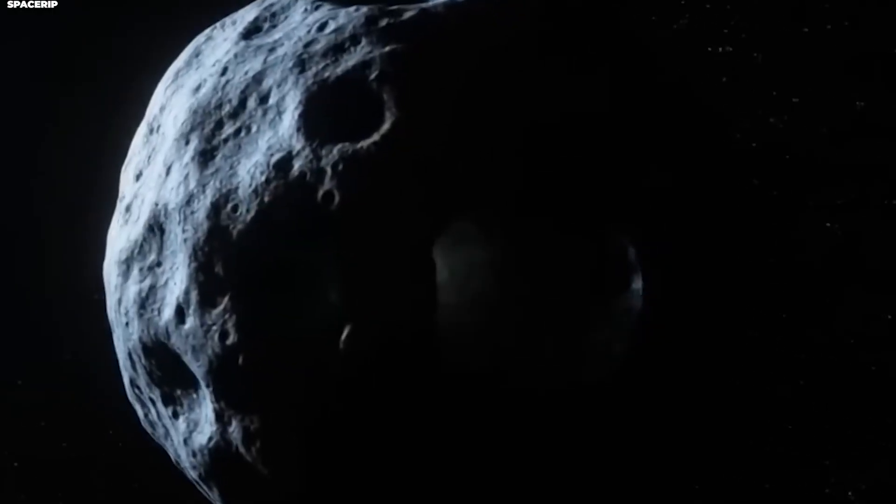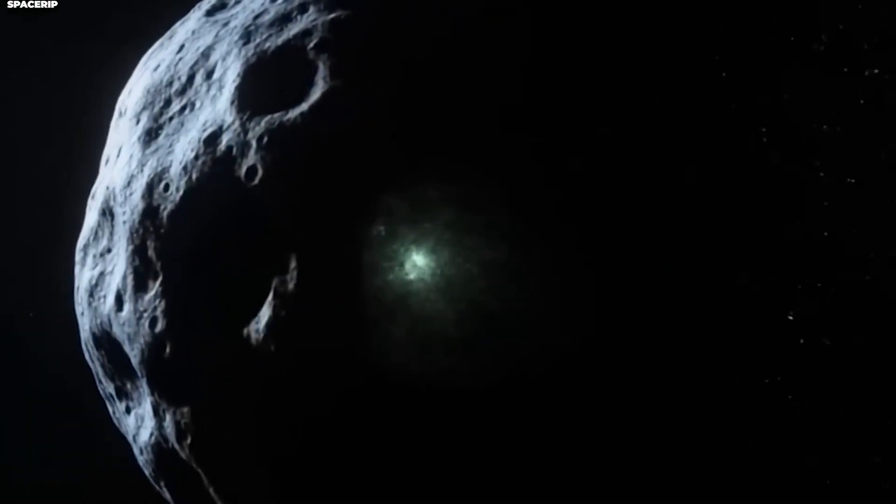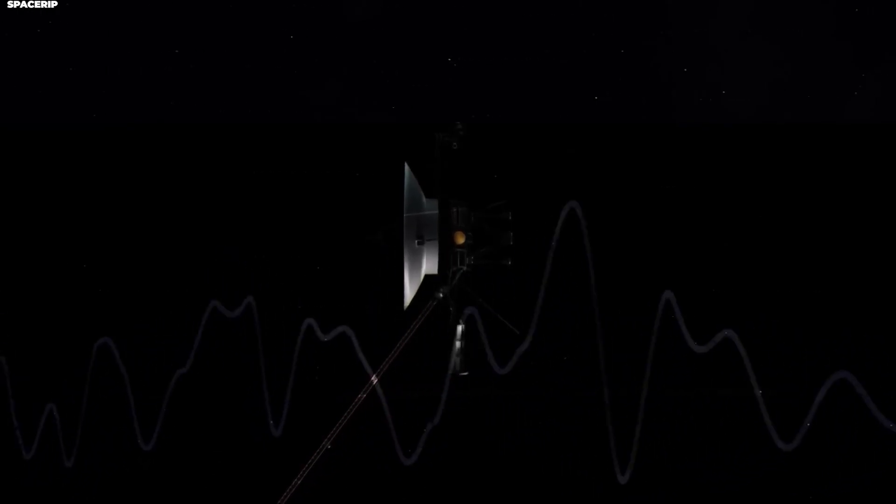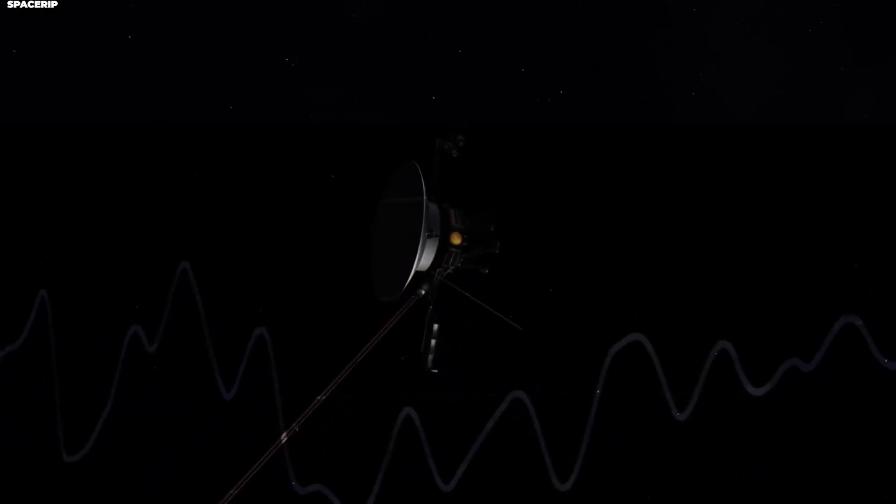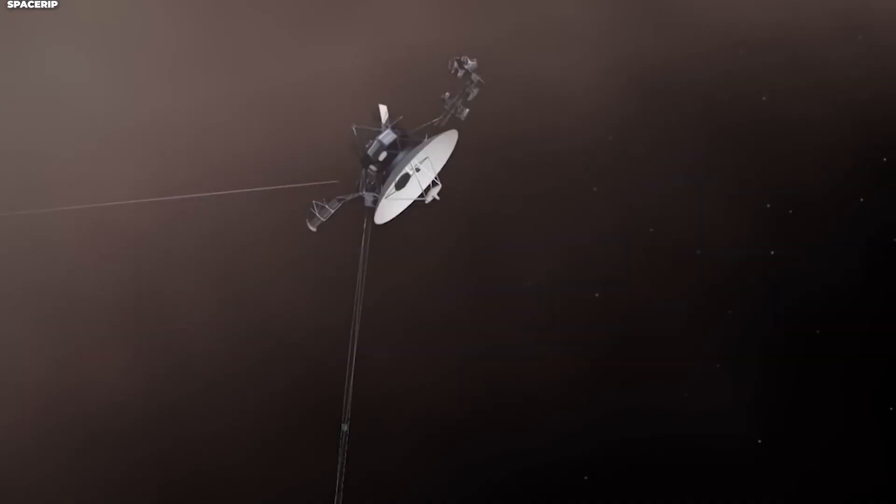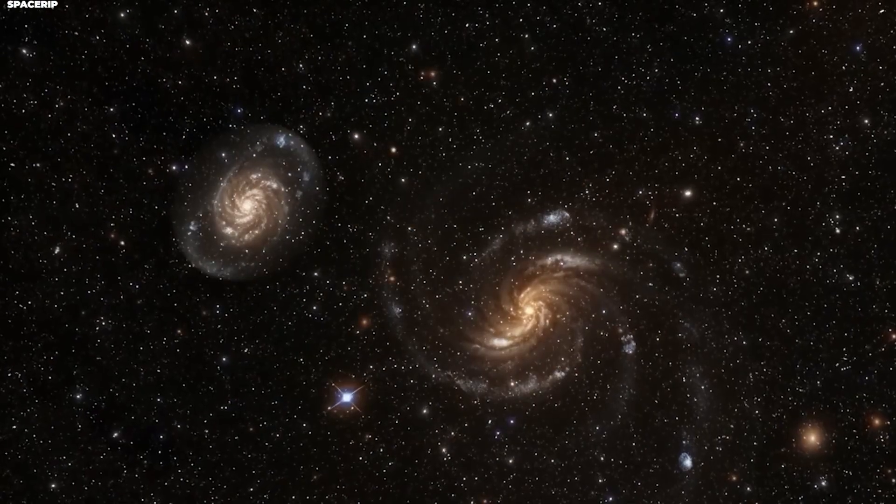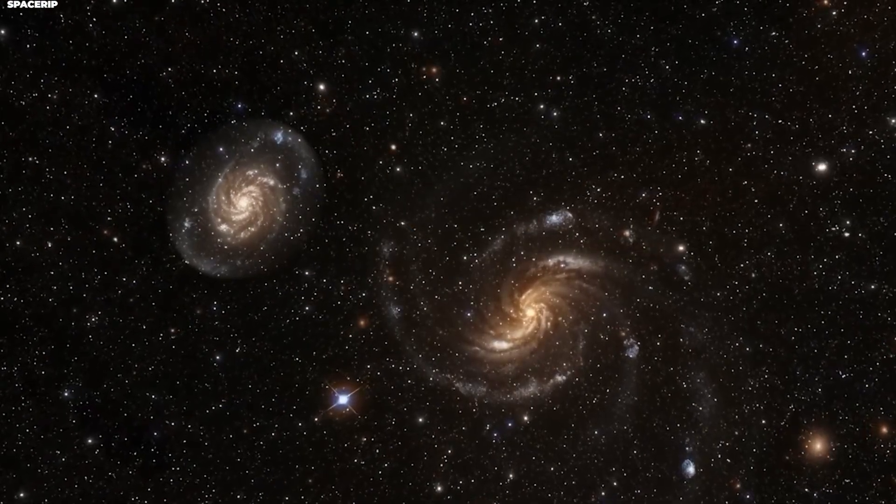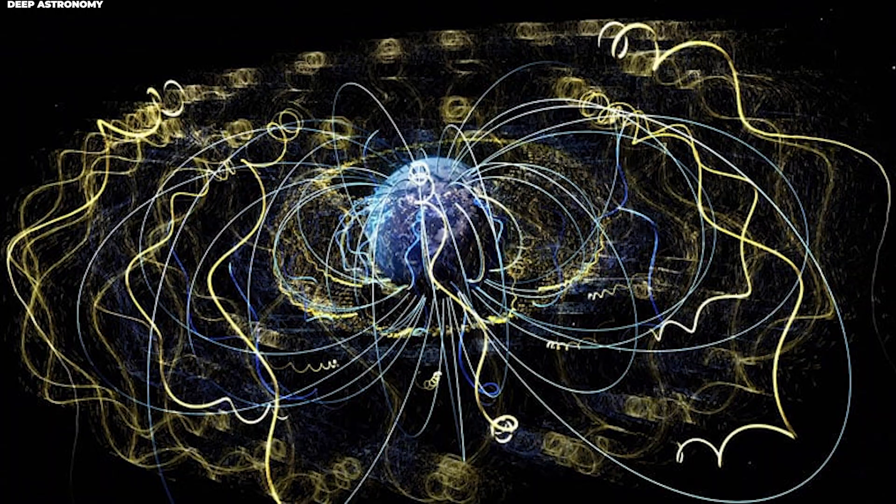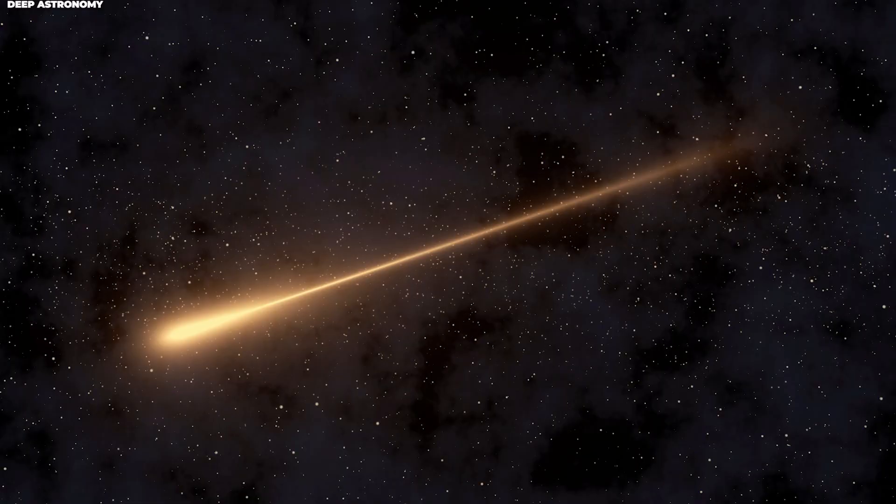specifically is challenging. The interstellar environment is already quite variable with cosmic rays, magnetic field fluctuations, and plasma waves occurring naturally. You might be thinking, so they didn't really detect the comet? Was this whole thing a failure?